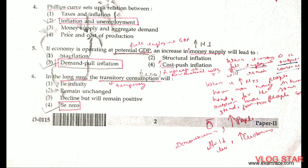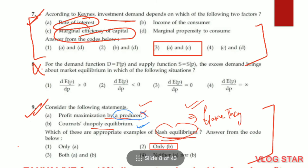Question number 6. In the long run, transitory consumption will be zero. Transitory consumption means temporary consumption, and in the long run, temporary things cannot sustain — so it will be zero. Question number 7. According to Keynes, investment demand depends on two factors: the rate of interest and the marginal efficiency of capital.